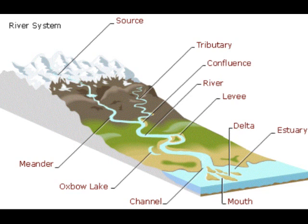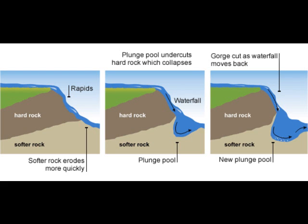Waterfalls are formed when a band of harder rock lies on top of a band of softer rock, and the softer rock gets worn away more easily than the harder rock. This leaves the harder rock unsupported. The hard rock then collapses into a plunge pool and the process starts all over again. Over time, the waterfall retreats upstream and a steep-sided gorge will be left behind. In an examination, you should write that the waterfall will retreat, unless the question is asking you how a gorge forms.